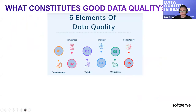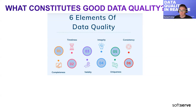What constitutes good data quality? There are six elements. The first is completeness, defined as the measure of the percentage of data that is missing from a dataset. For products or services, data completeness is critical because it is how potential customers compare and make decisions. For example, if a product description does not include some data while all other product descriptions do, that data is incomplete and can ruin analysis.